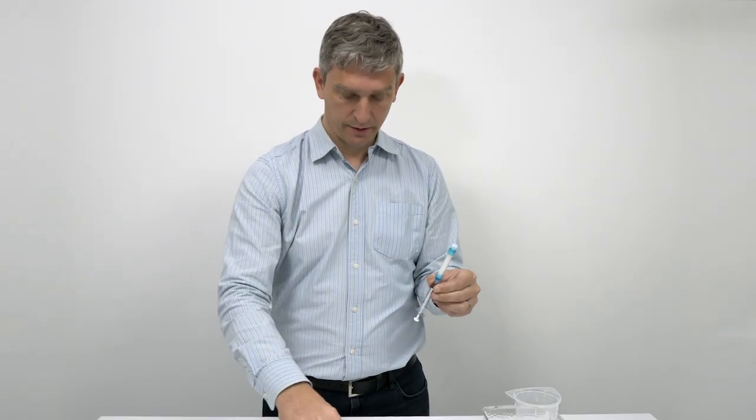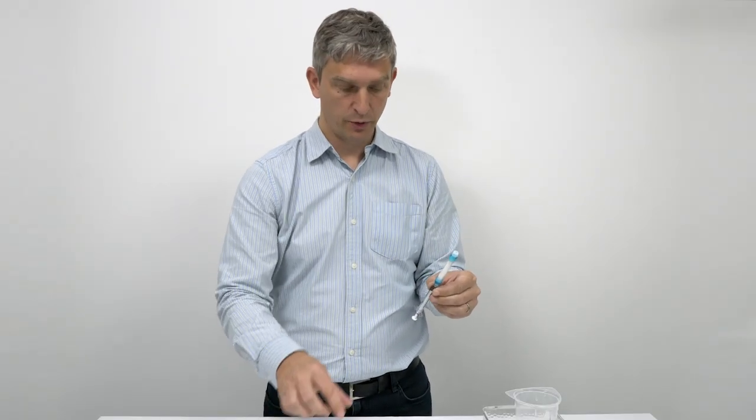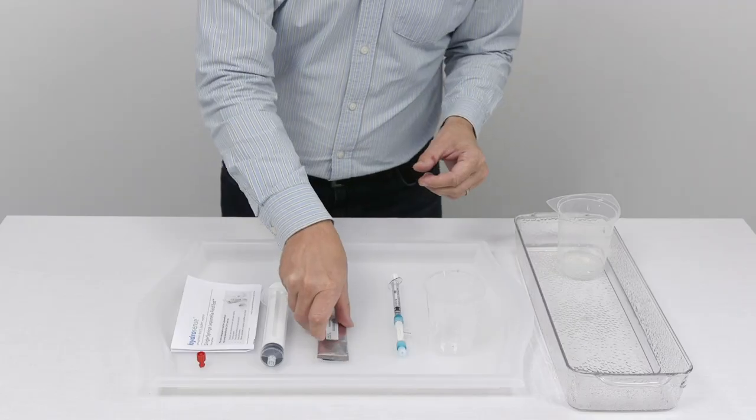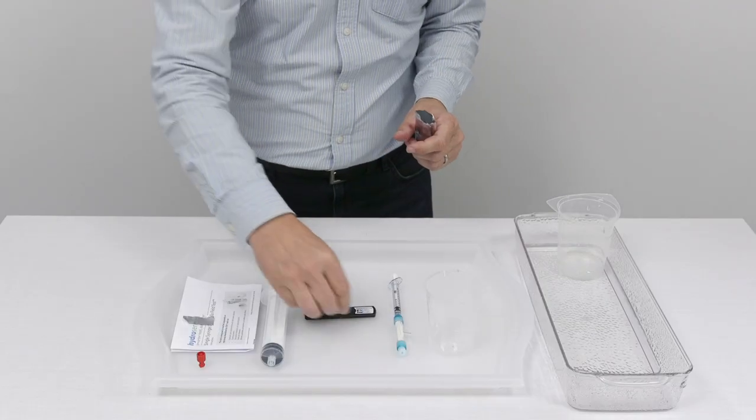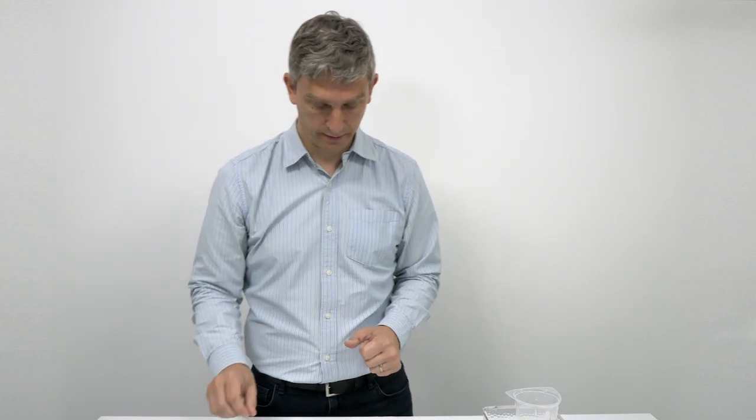So next we can take the test strip out of its foil packaging. It's important to only do this when you're ready to add the sample. The test strip is sensitive to moisture and therefore should only be removed prior to use. So we can open the foil, place this cassette on a flat surface. There's also a small dropper within the foil but we don't need that for this version of the test kit.